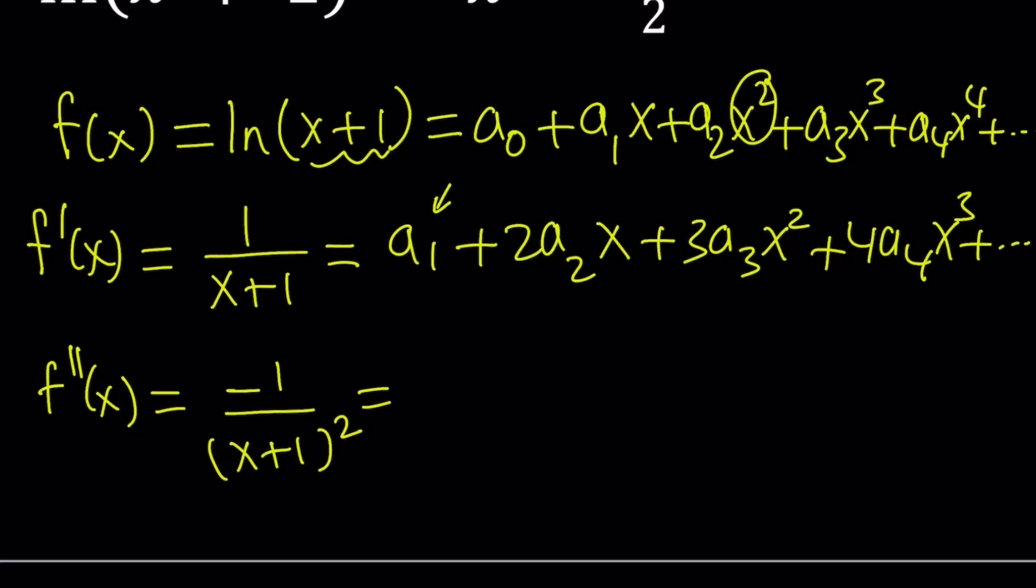The derivative of the constant is always 0. So just totally ignore it. The derivative of 2a₂x is just 2a₂. And then x² is 2x, multiply that by 3. So you get 6a₃x and then 12a₄x² and so on and so forth.